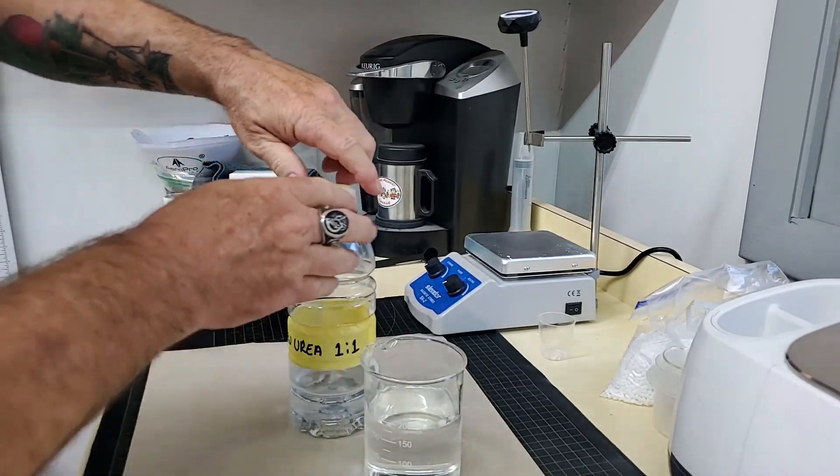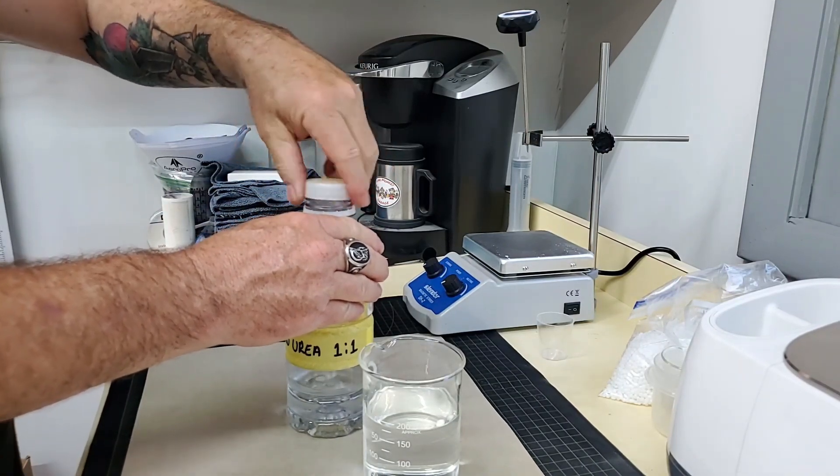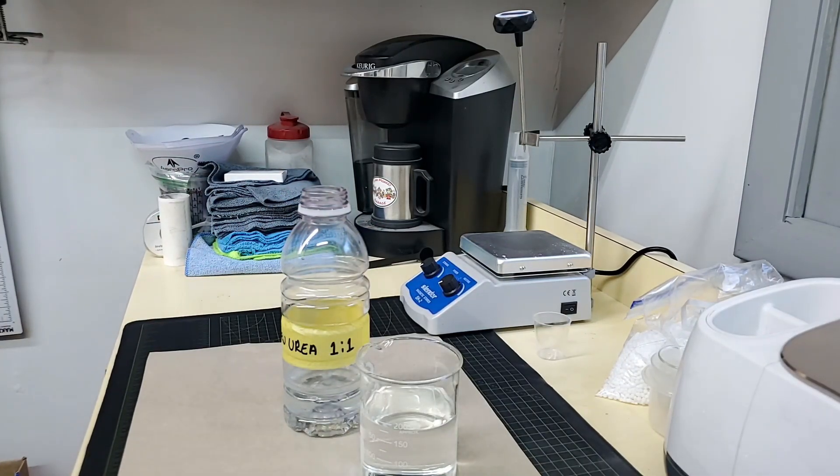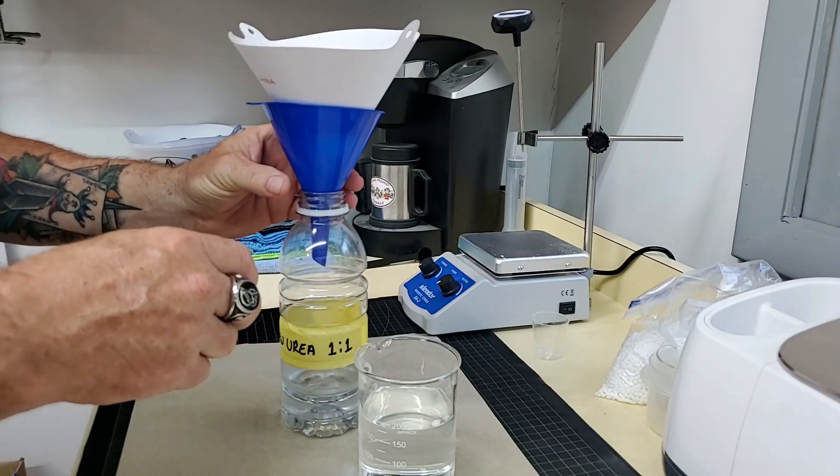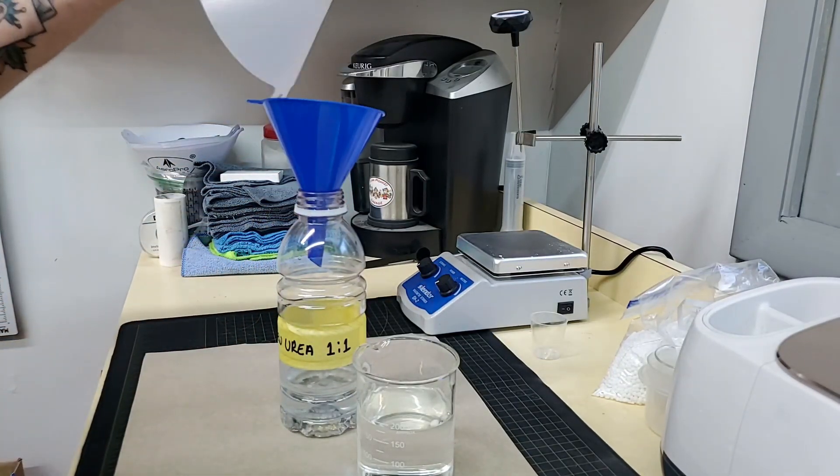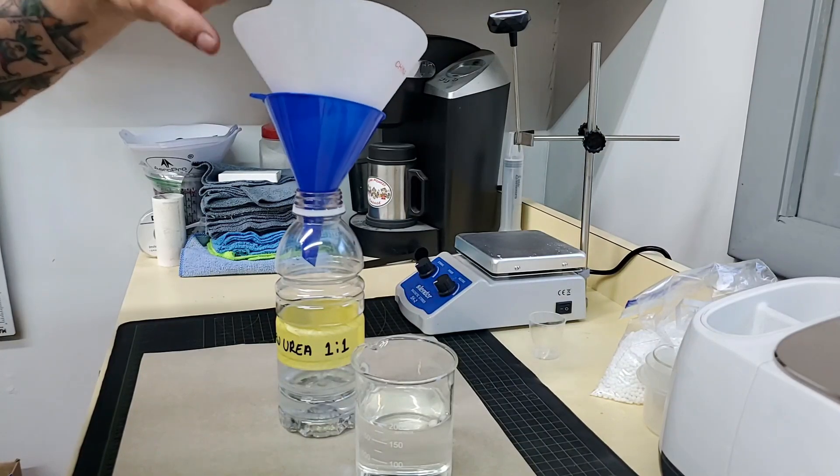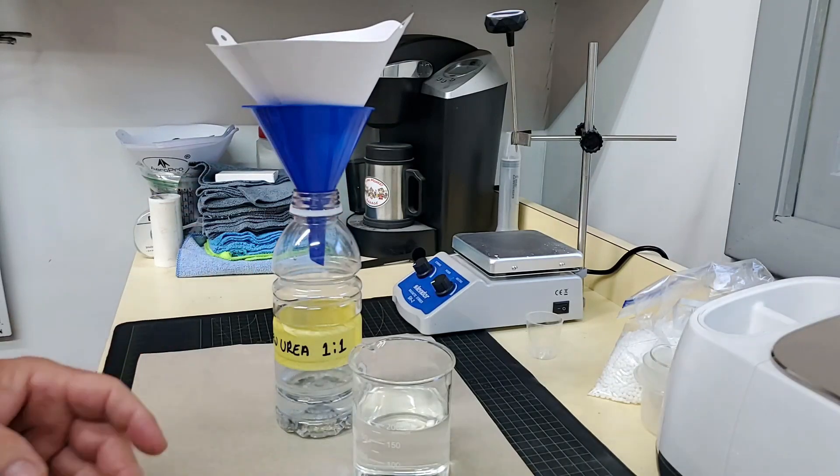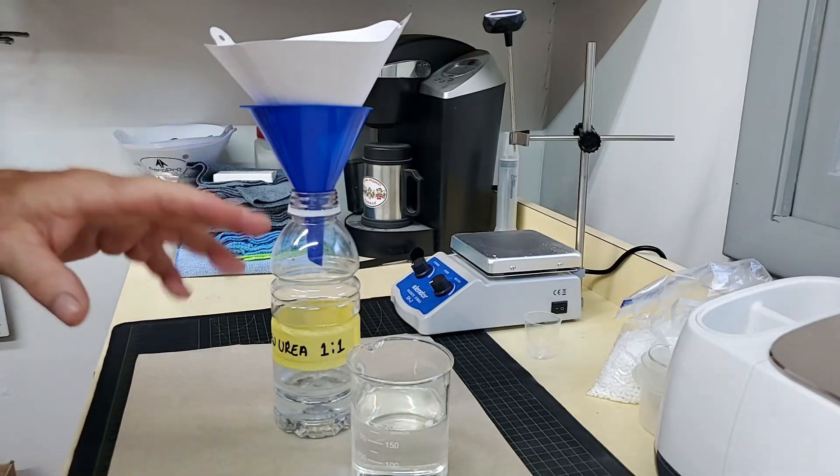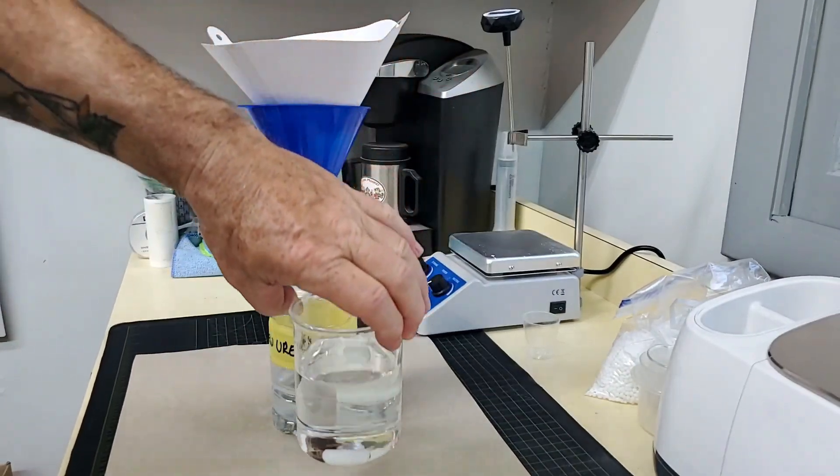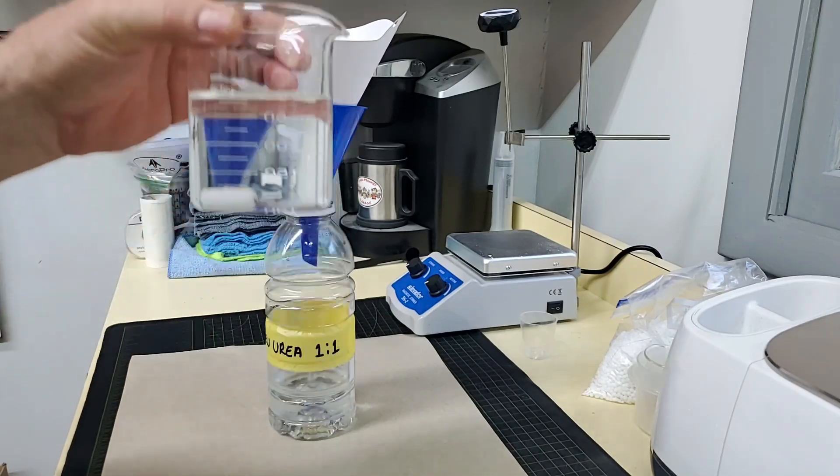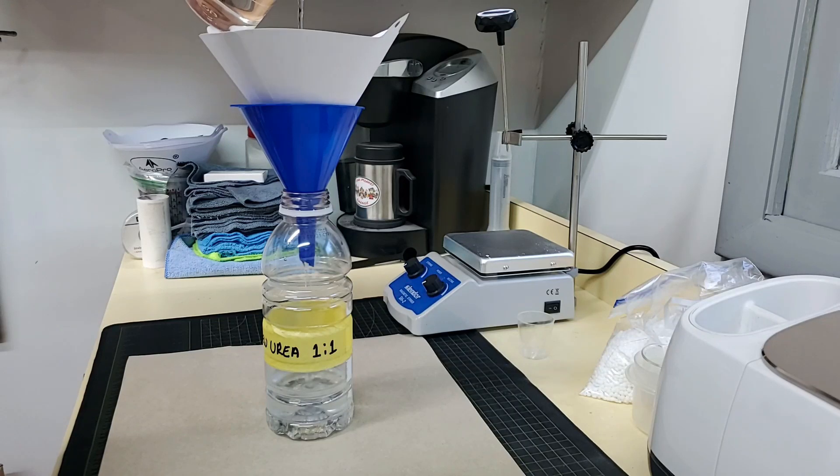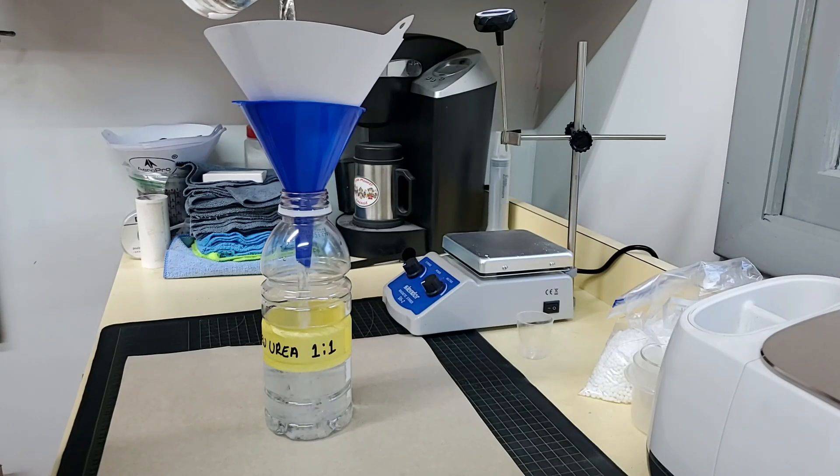I've got my jar here that I have the first mixture that I mixed up. And what I use is a funnel and just a regular paint strainer. This will filter out any contaminants in the urea and it will also catch your pill. So we're just going to pour that into our bottle.